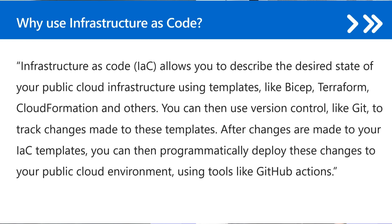You can use version control like Git to track changes made to those templates. And this is beneficial because after changes are made to your infrastructure as code templates, you can then programmatically deploy these changes to your public cloud environment using tools like GitHub Actions. I'm particularly interested in how you programmatically deploy these changes, and you did mention GitHub Actions, which I believe we'll be showing a bit later on.